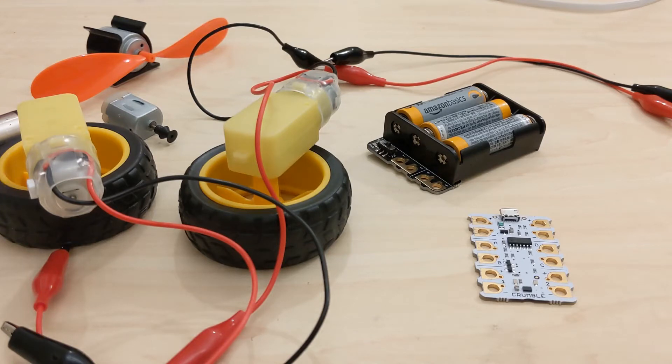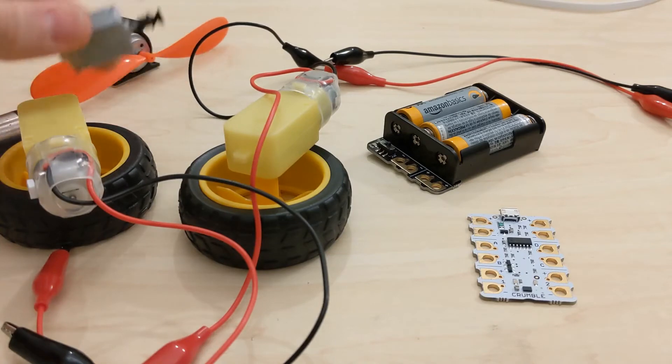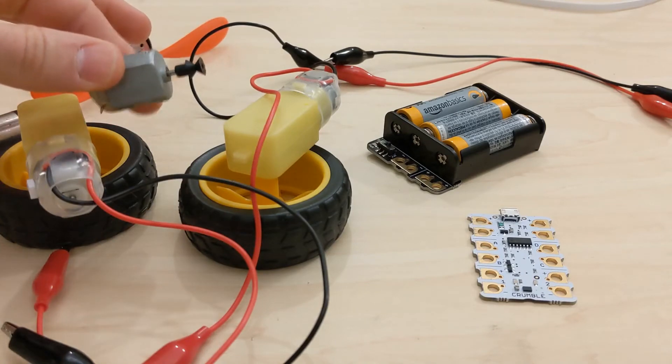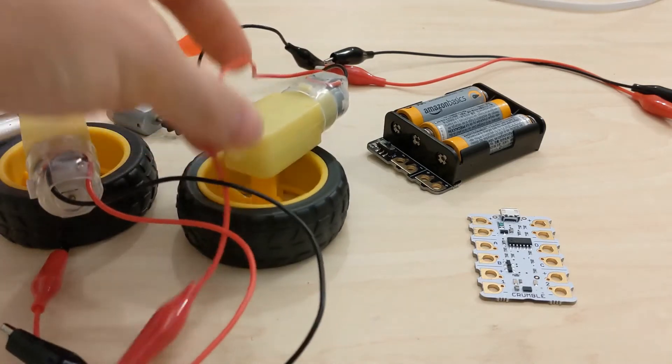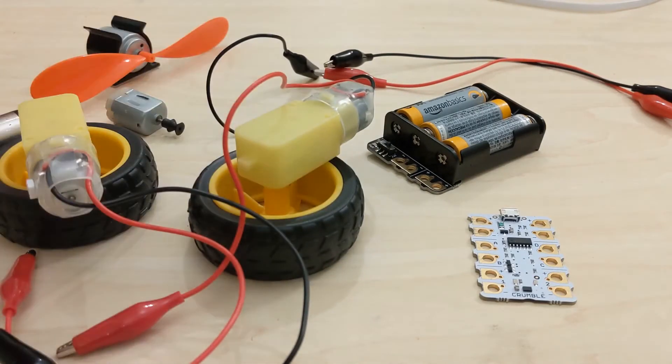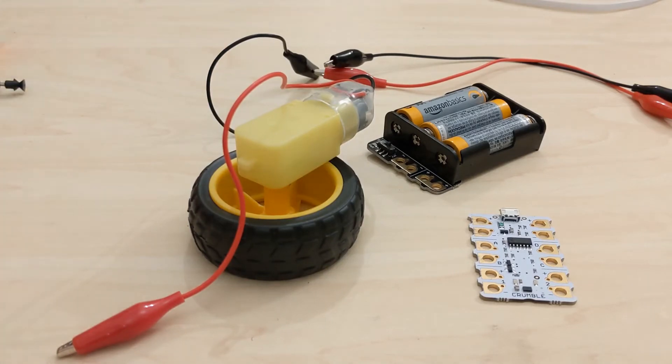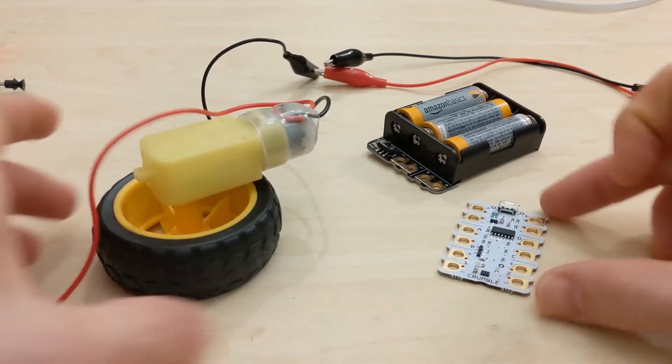In the original introduction video we looked at how you can control a range of different motors, everything from the motors you might find in kits at school to the Redfern motors which they sell on the website with pre-made crocodile clip wires. For this demo we're just going to use one of the Redfern ones because they've got all the wires on, and we'll look at how we might go about controlling one.